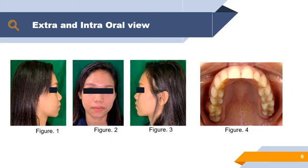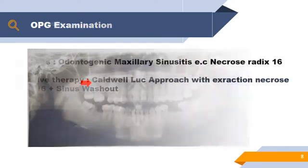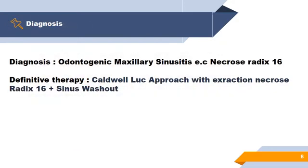Intraoral examination found gingival hyperemia, edema, and edentulous region at tooth 1.6. From the panoramic radiograph, we can see a retained root at 1.6 and a cloudy appearance surrounding the right sinus cavity, with the sinus border not clearly visible. Based on the anamnesis, clinical examination, and panoramic radiology, we diagnosed odontogenic maxillary sinusitis ad causa necrosis radix 1.6. The definitive therapy planned was the Caldwell-Luc approach, extraction of necrotic root 1.6, and sinus washout.